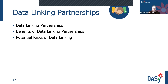The toolkit defines data linking partnerships and shares the benefits with concrete examples such as linked person-level records, time and cost savings, program and agency efficiency, and improved relationships of state staff. It also discusses the limitations, including potential risks and associated costs.